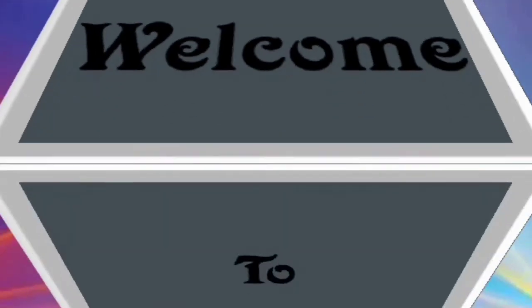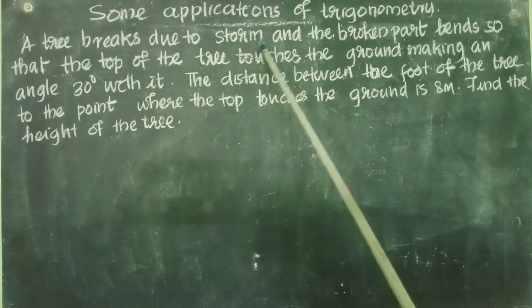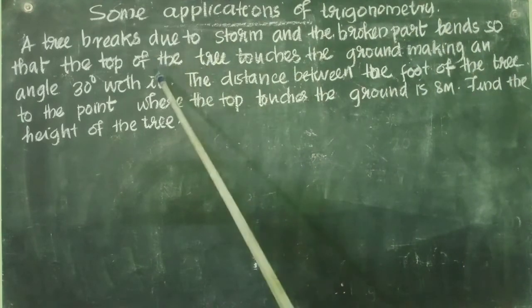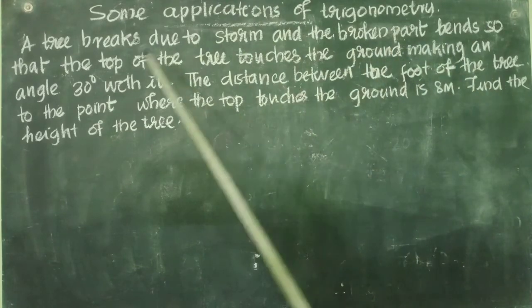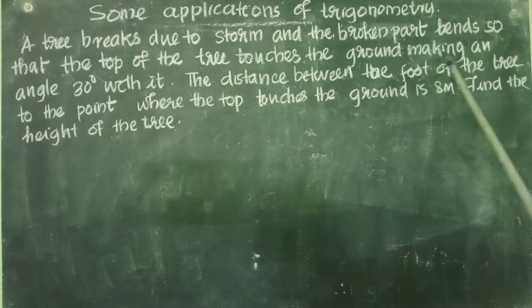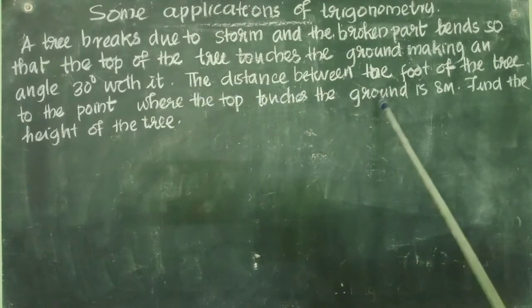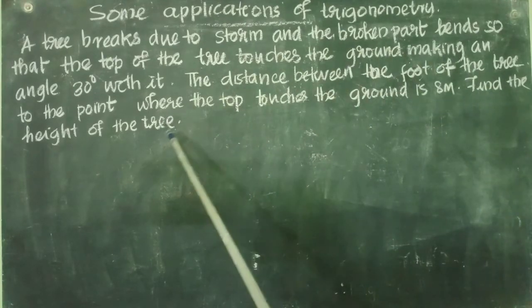Dear students, welcome to Blackboard. A tree breaks due to storm and the broken part bends so that the top of the tree touches the ground, making an angle of 30 degrees with it. The distance between the foot of the tree and the point where the top touches the ground is 8 meters. Find the height of the tree.